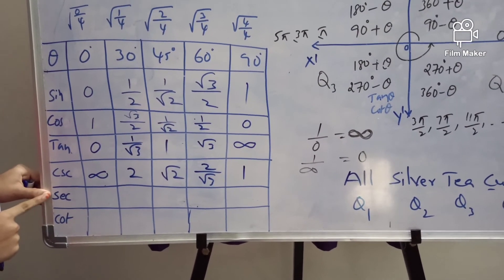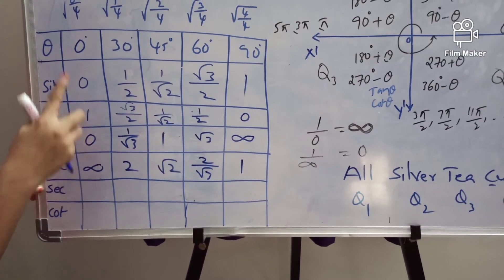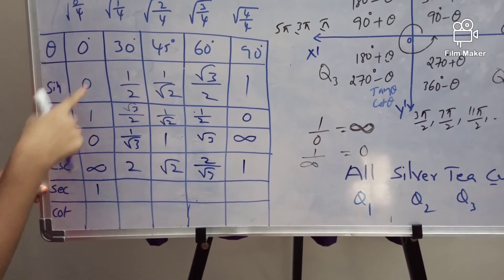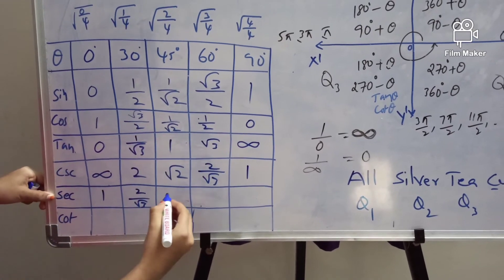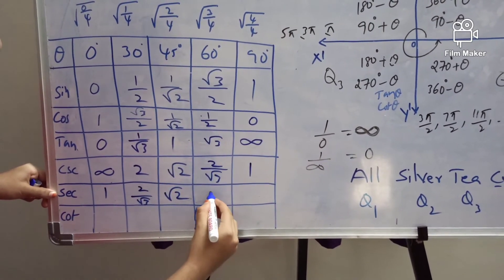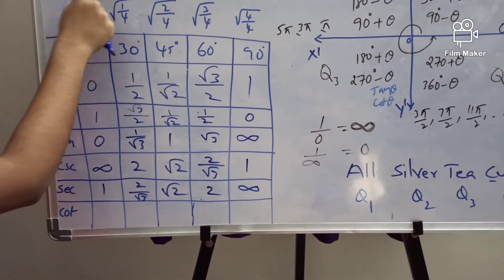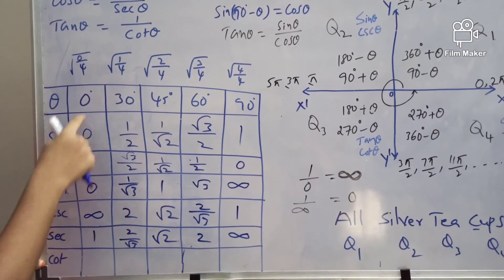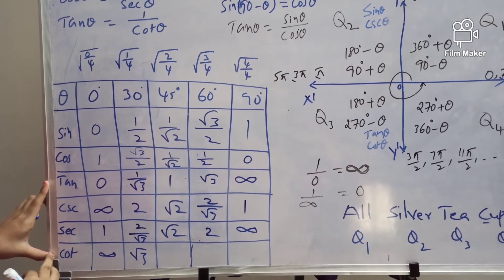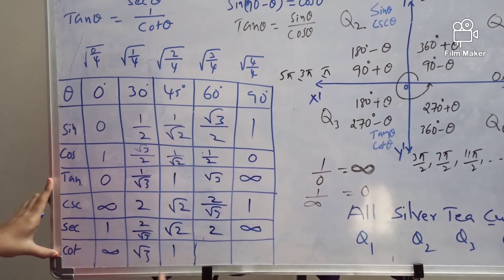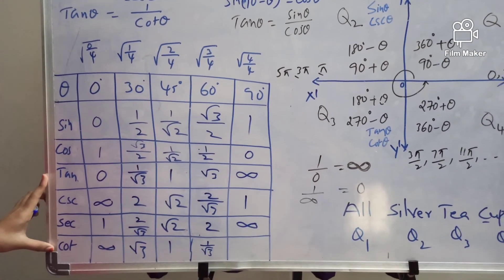Sec θ = 1/cos θ. Sec 0° = 1/cos 0° = 1/1 = 1. Sec 30° = 2/root 3. Sec 45° = root 2. Sec 60° = 2. Sec 90° = infinity. Cot θ = 1/tan θ. Cot 0° = 1/tan 0° = 1/0 = infinity. Cot 30° = root 3. Cot 45° = 1. Cot 60° = 1/root 3. Cot 90° = 1/infinity = 0.